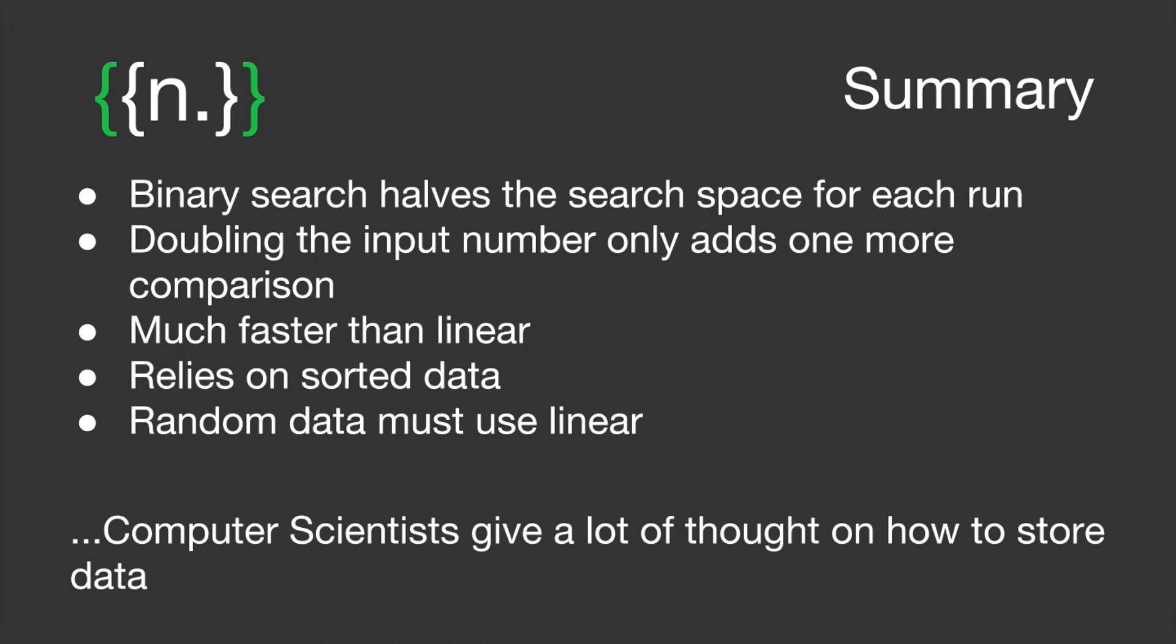If you have random data or data that is not in order, you have to use linear search. So it's understandable as to why computer scientists give a lot of thought about how they store their data. It's another big area of computer science called data representation, which we'll talk about in future videos.